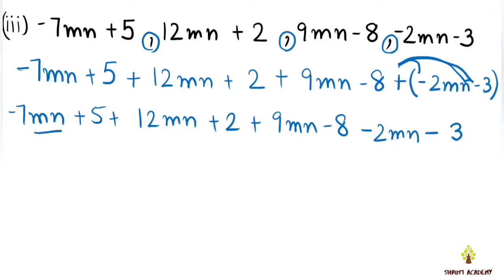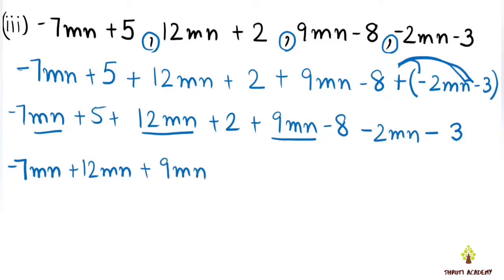In this example, we have MN terms: minus 7MN, plus 12MN, plus 9MN, and minus 2MN. The numerical coefficients also involve: plus 5, plus 2, minus 8, and minus 3.